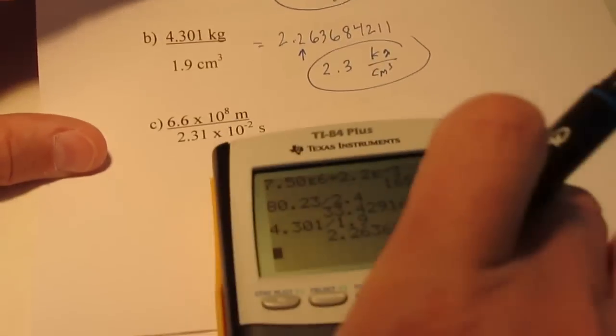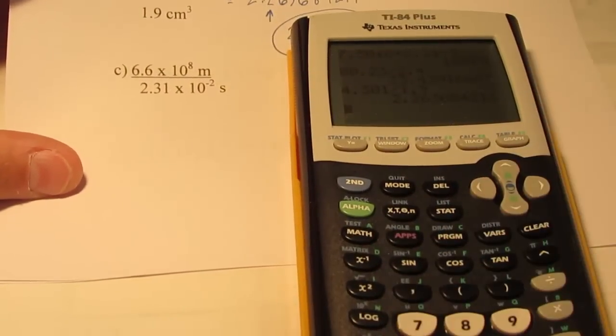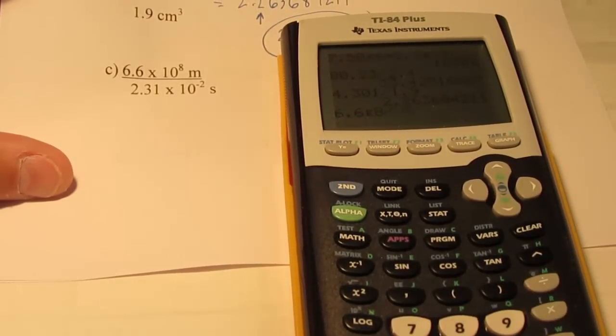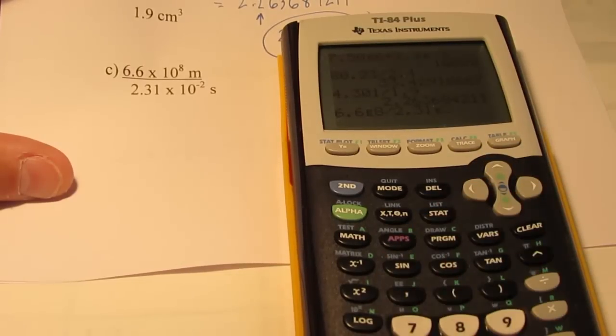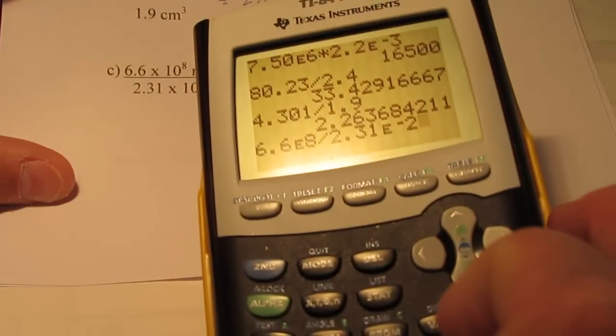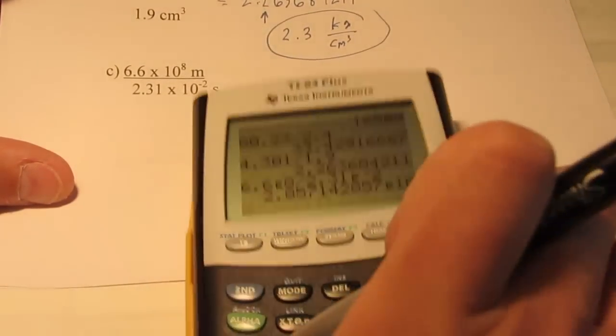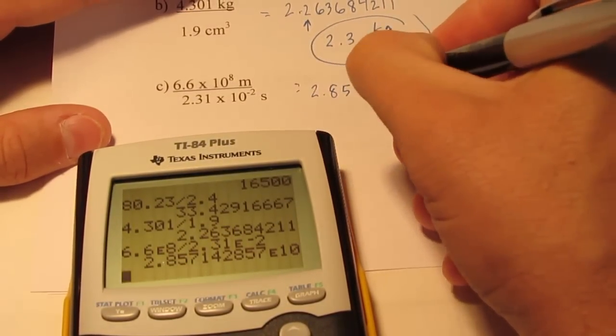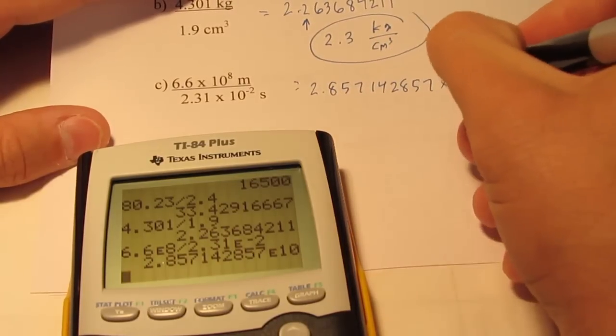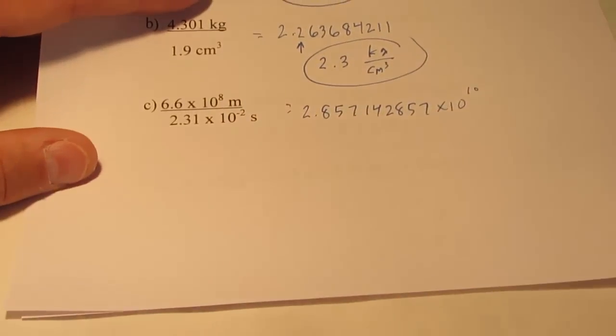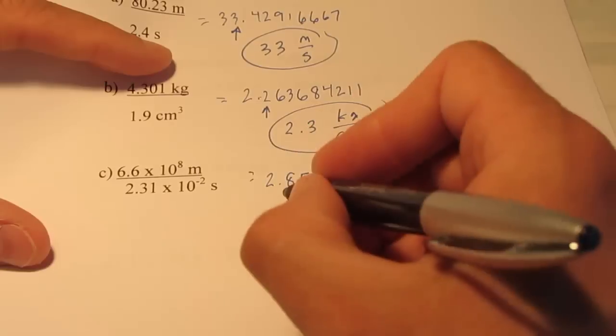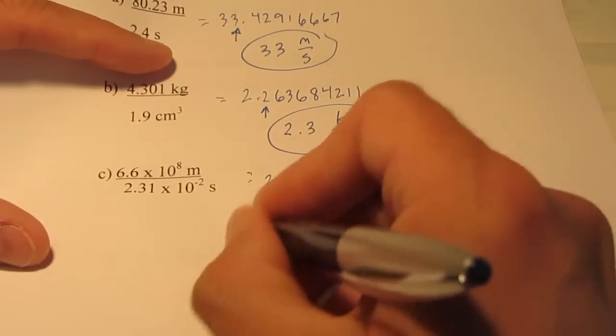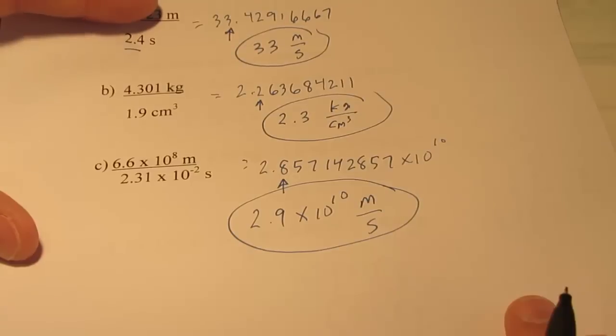And the last one, we have some scientific form. So, we get to practice that again. So, we have 6.6 second EE to the eighth divided by 2.31 second EE to the negative second. That should be what your view screen looks like there. We'll hit enter. Oh, boy. That's an ugly number. Two point eight five seven one four two eight five seven times ten to the tenth. I have two sig figs here. Three sig figs here. I have to round off to two sig figs. Two point nine times ten to the tenth meters per second. Okay. There you have it.